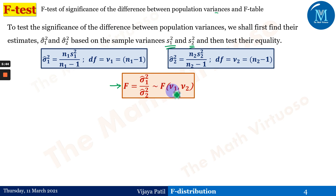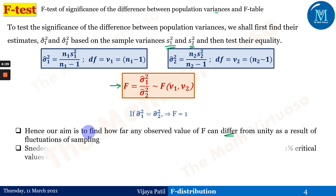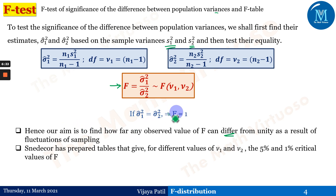If the two population variances are equal, this quotient gives F equals 1. That's the reason we always try to find out how far an observed value of F can differ from unity as a result of sampling fluctuations. We always arrange so that μ̂₁² is greater than μ̂₂², making F greater than or equal to 1. Snedecor has prepared tables that give, for different values of ν₁ and ν₂, the 5% and 1% critical values of F.